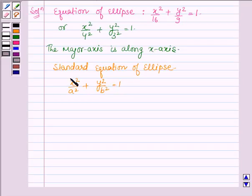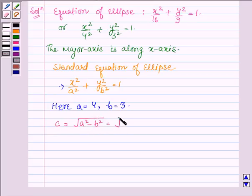On comparing it with the general form of the equation of ellipse, we find here that a is equal to 4 and b is equal to 3. Now, let us find c. c is equal to root over a square minus b square. So, we have root over 16 minus 9 and this is equal to root over 7.